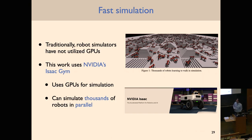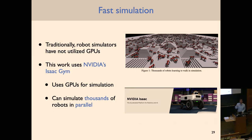For fast simulation, this paper uses NVIDIA's Isaac Gym, a recent simulation environment leveraging GPUs. Unlike traditional CPU-based robotic simulators, Isaac Gym allows simulating thousands of different robots in parallel, which is crucial for RL since the trial and error process can take many iterations to converge to a good policy.